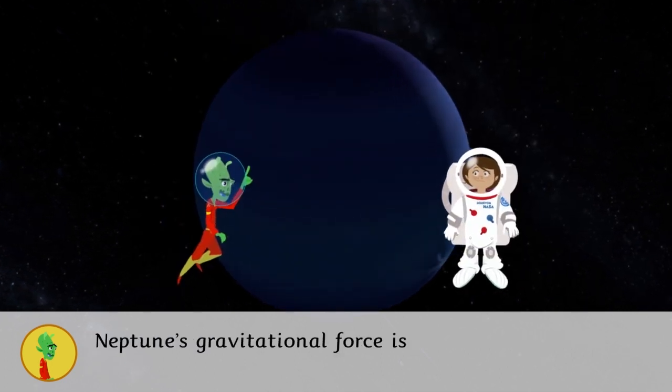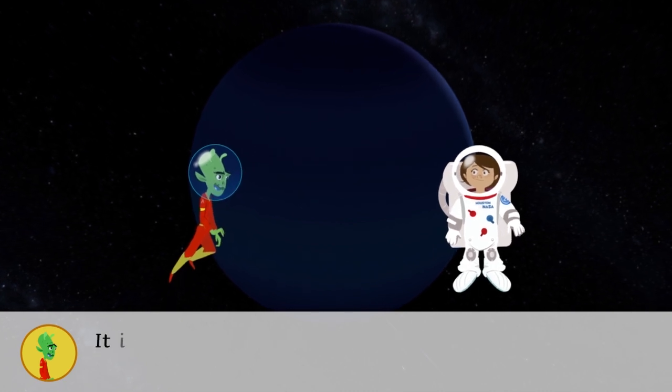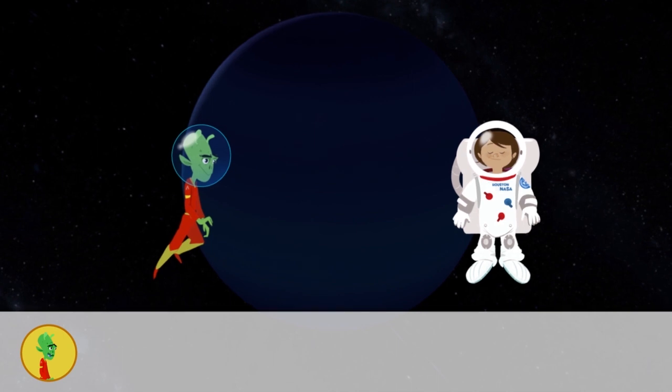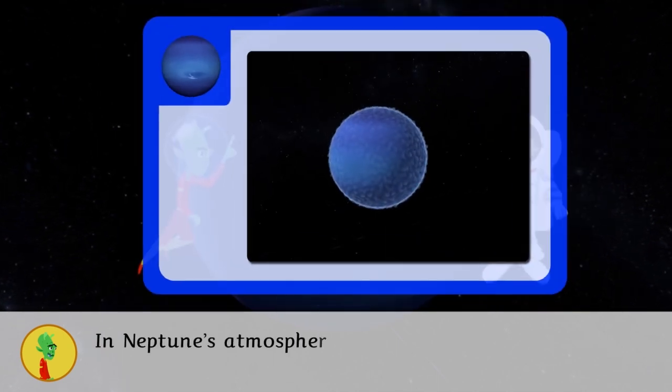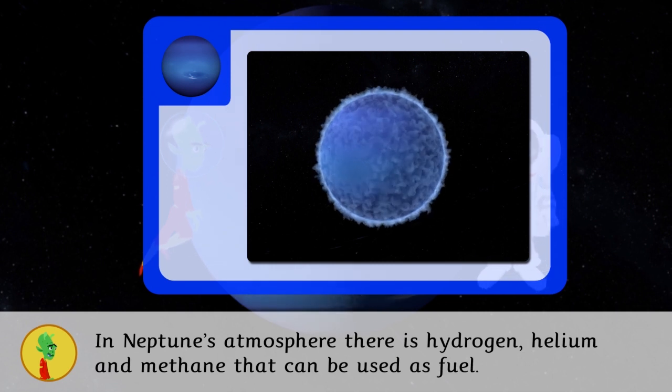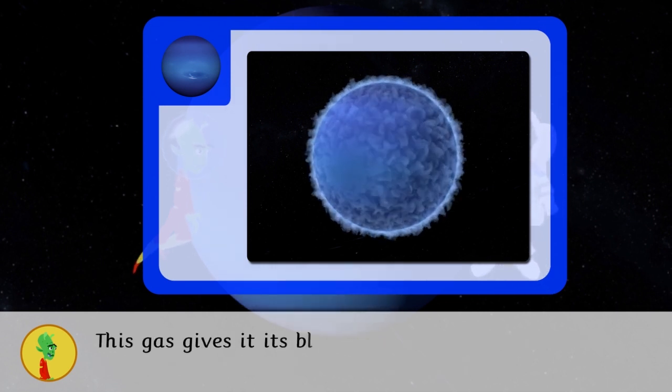Neptune's gravitational force is similar to Earth's. It is a big planet but not very dense because it's made of gas and liquids. In Neptune's atmosphere there is hydrogen, helium, and methane that can be used as fuel. This gas gives it its blue color.